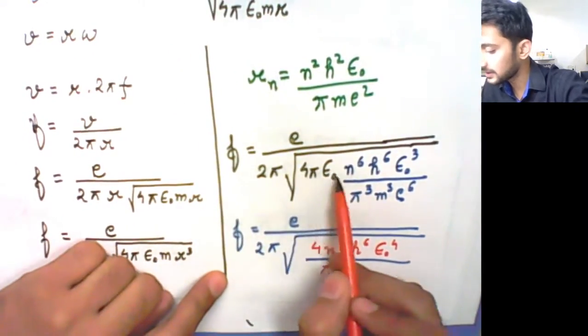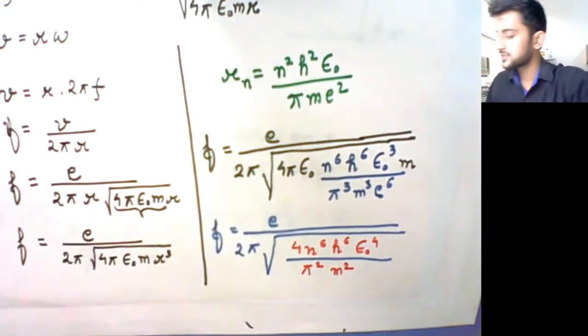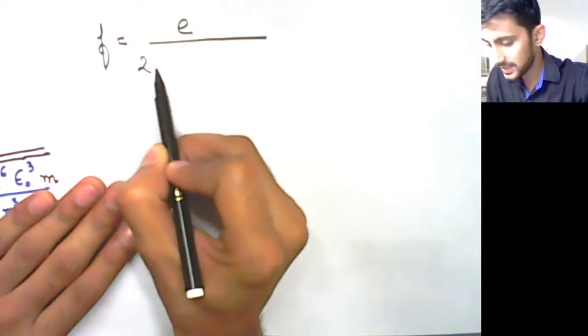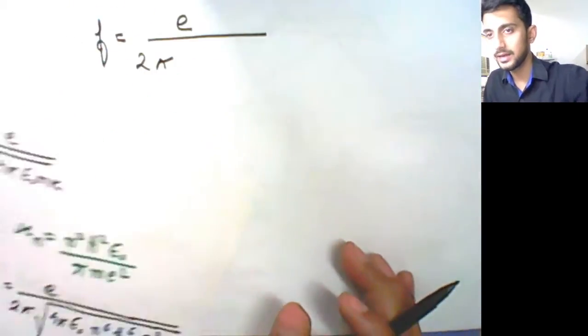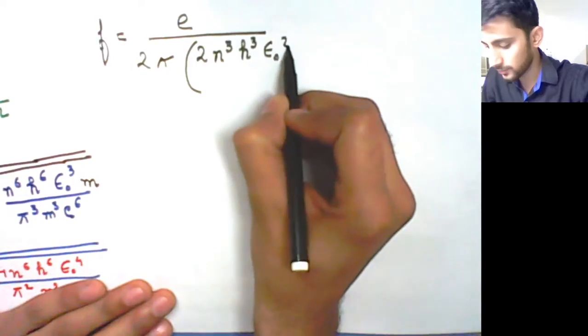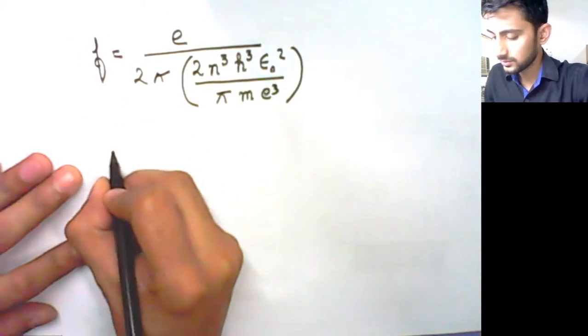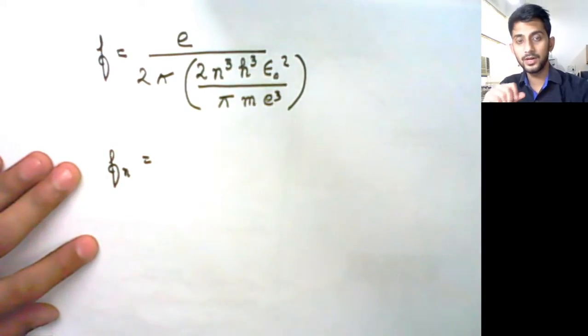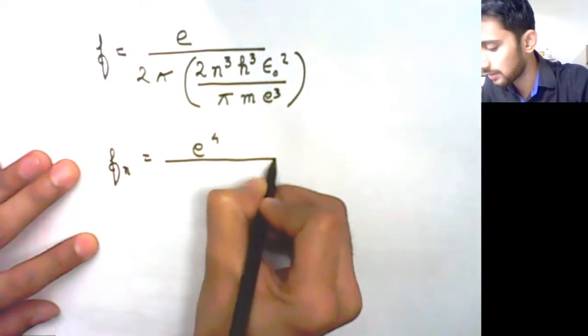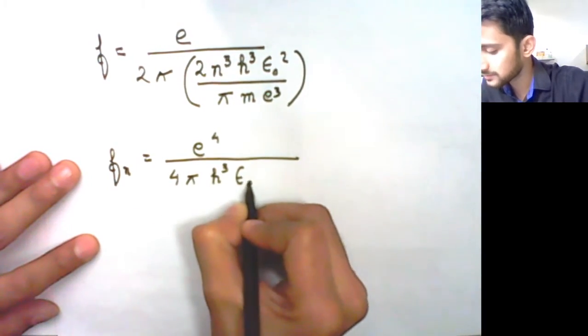Here we also have an m term, so 4πε₀ contributes an m. Solving further, the frequency f equals e upon 2π and taking everything out of the square root, we get 2n³h³ε₀² upon π into m. With e to the power 6 under the root giving e to the power 3, the frequency of revolution for an electron in the nth orbit becomes e⁴ upon 4πh³ε₀².